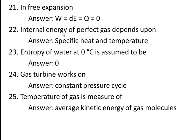Twenty-second question: internal energy of a perfect gas depends upon — answer: specific heat and temperature. The internal energy formula is U = m·cv·ΔT, where m is mass, cv is specific heat at constant volume, and ΔT is change in temperature. Specific internal energy of a perfect gas depends on specific heat and temperature, as specific energy is an intensive property.